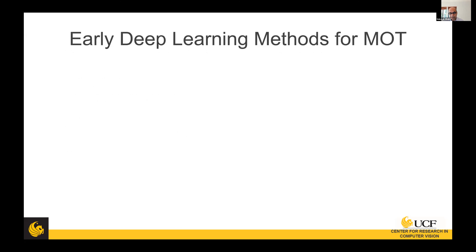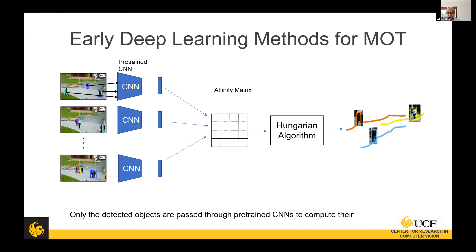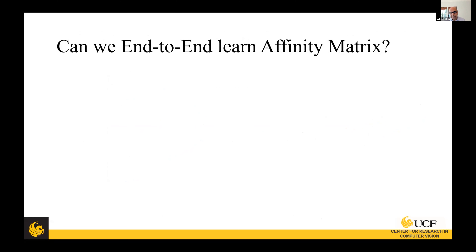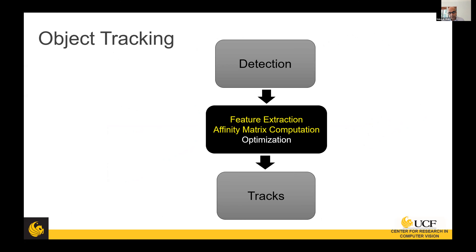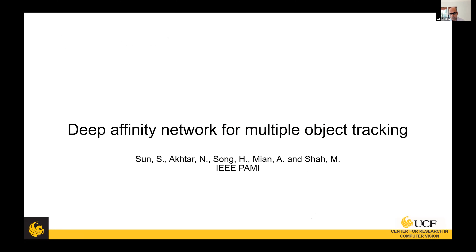Then deep learning came in, and people started using CNN features instead of handcrafted features. You can take the pre-trained ImageNet model, get the features, compute affinity, and then do Hungarian matching. But the question is: can we actually end-to-end learn the affinity matrix, not just use features from a pre-trained model and then compute affinity separately? That's the topic I want to talk about. We have a paper called Deep Affinity Network for Multiple Object Tracking.